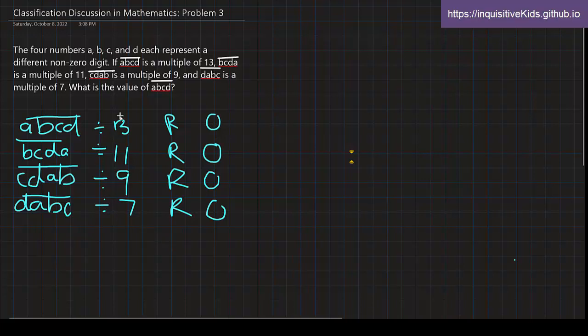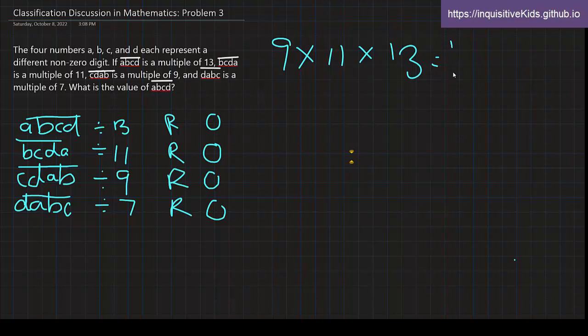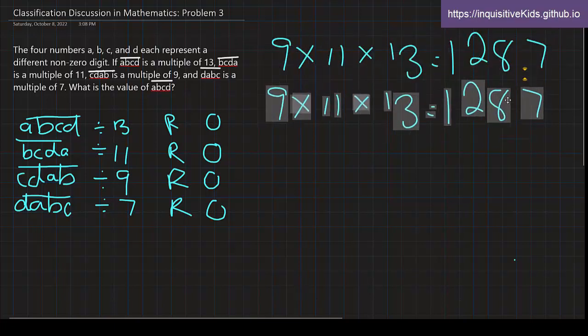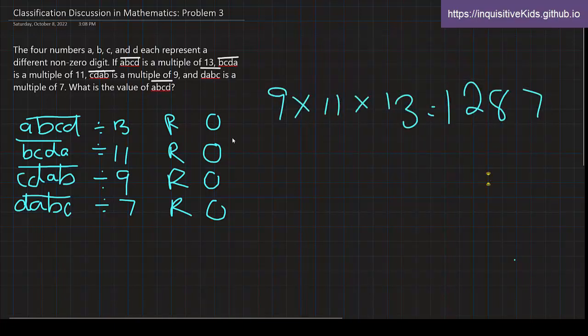Well, these are all multiples of 9, 11, and 13. So their product must be a multiple of the product of 9, 11, and 13, which is equal to 1,287. So the first three numbers product has to be a multiple of 1,287.